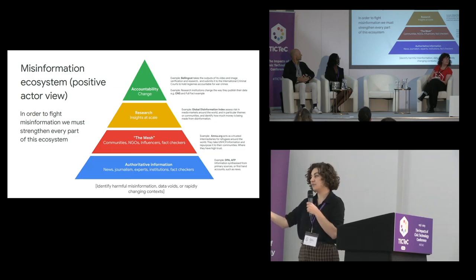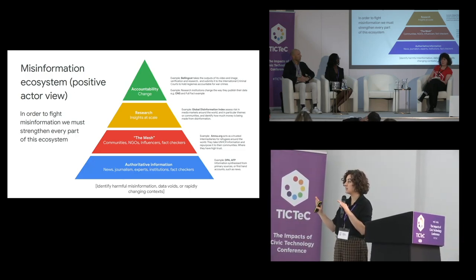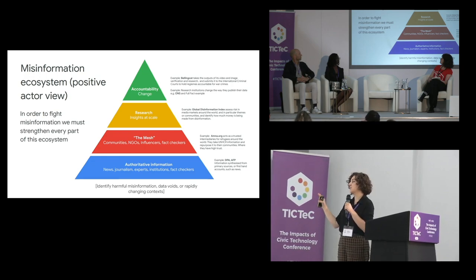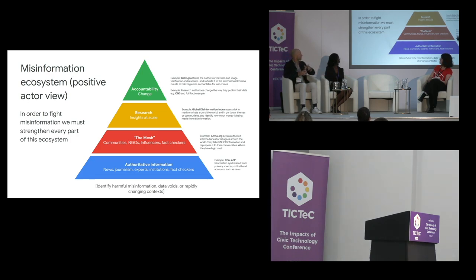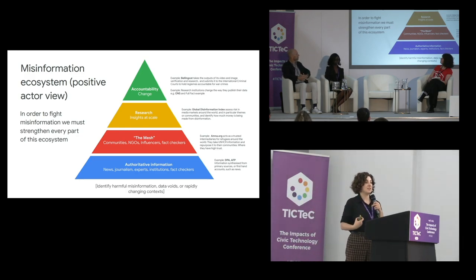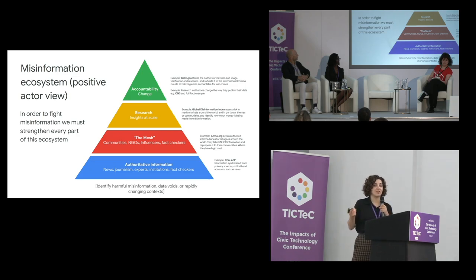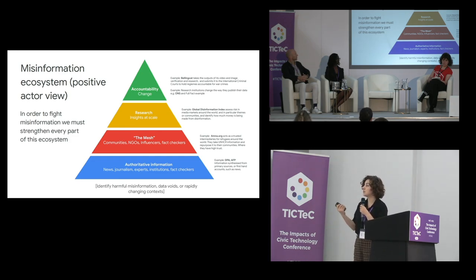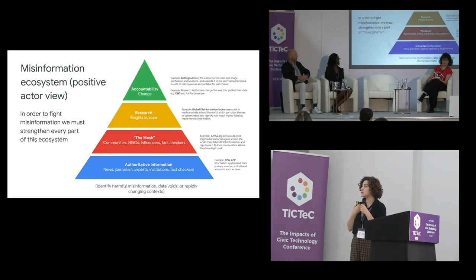It's not enough to just put out authoritative information. You need to identify where there are data voids or harmful gaps in rapidly changing contexts, and then with media organizations, experts, and fact-checkers, fill those gaps. But on top of that, they introduced what they called the mesh layer — a series of organizations that don't necessarily create authoritative information but do amplify it because they're very trusted in their own communities. These were community organizations, NGOs, and influencers. A good example is Amna.org, a trusted intermediary for refugees, who would take UNHCR information and repurpose it for their own communities where they had very high trust.